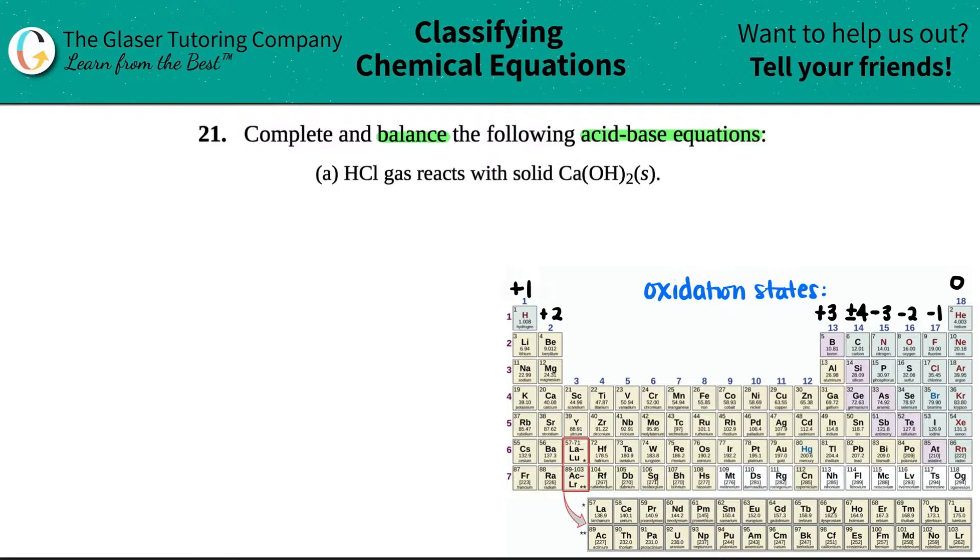So what I'm going to do is I'm just going to start over here. I'm going to write out my reactants. They told us that the compounds was HCl, reacted. So plus HCl reacted with solid Ca(OH)2.